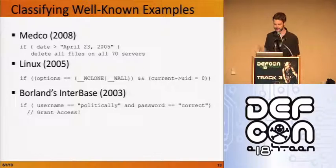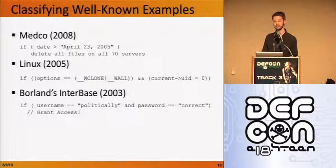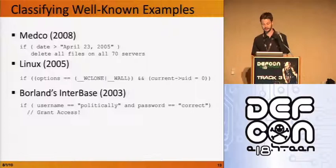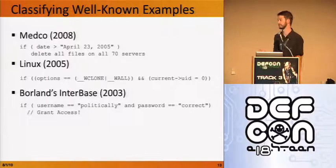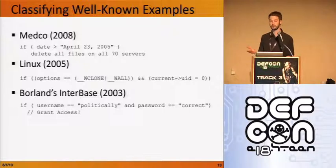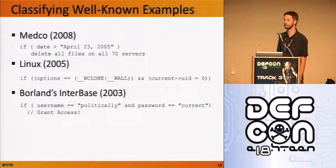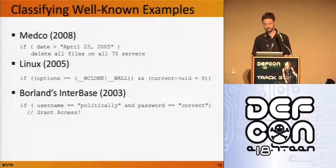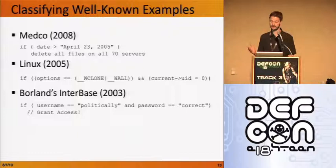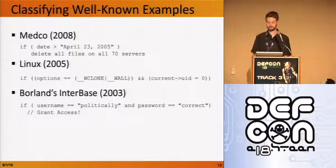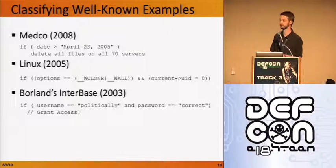The third example is the Borland Interbase case. They had a chicken-and-egg problem about authentication and fixed it by inserting a line of code that hard-coded a check: if the username was 'politically' and the password was correct. This works if the code is closed source, but once open source, everybody can spot it and grant themselves access. We can classify it three ways: authentication modification, hard-coded sensitive data (hard-coded username and password should not be in your application), and abnormal control flow path creation — it creates an additional control flow path that bypasses the authentication mechanism.